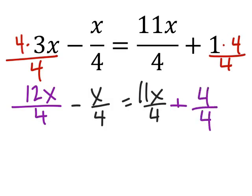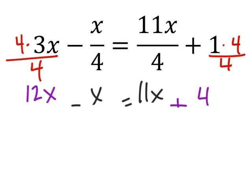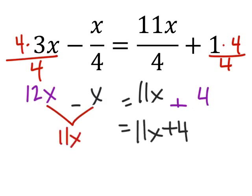Now we've gotten rid of all the denominators and at this point all we're going to do is solve for x using whatever method we choose. I'll just use those principles of equality on this. On this left side I'm going to combine the x's and then I have 11x equals 11x plus 4. Some of you already know what's going on right here.